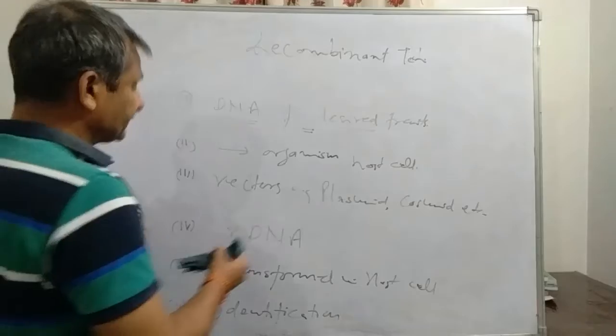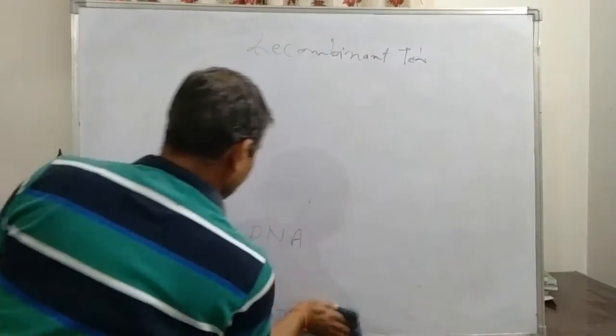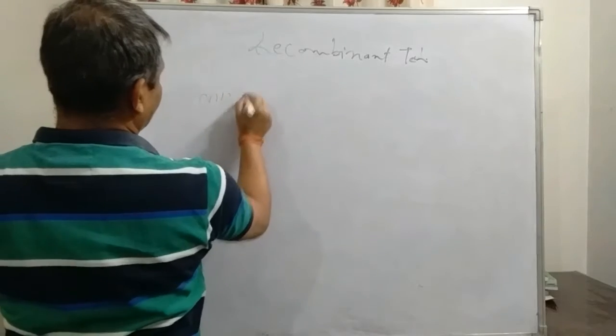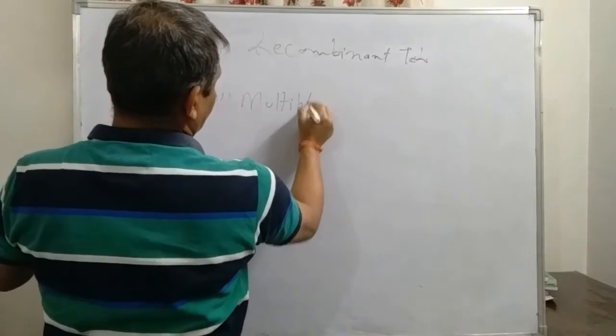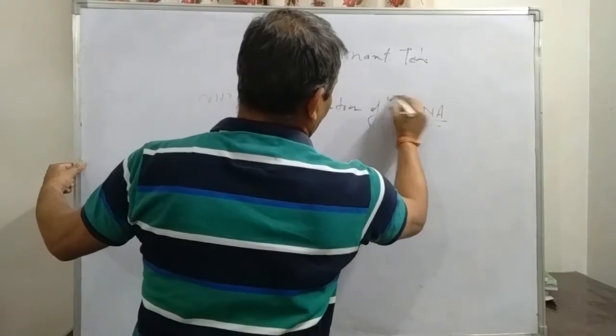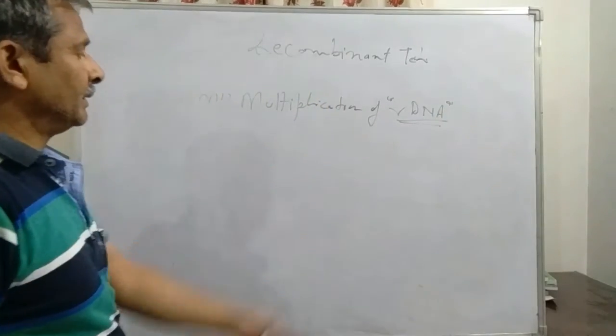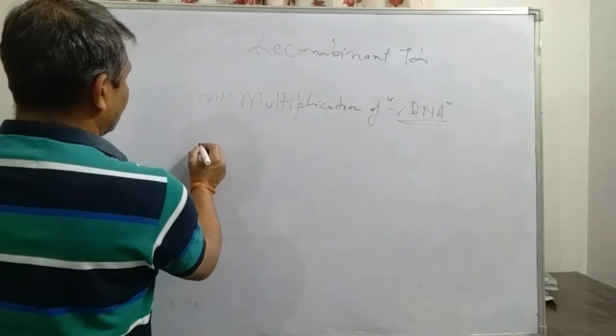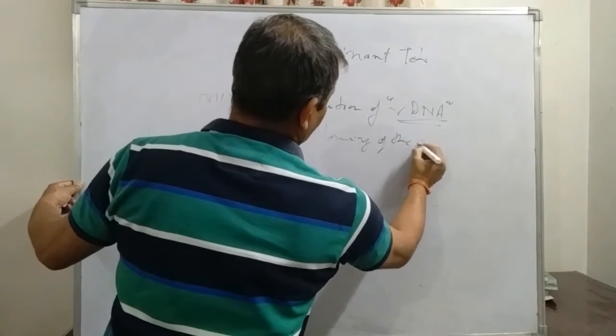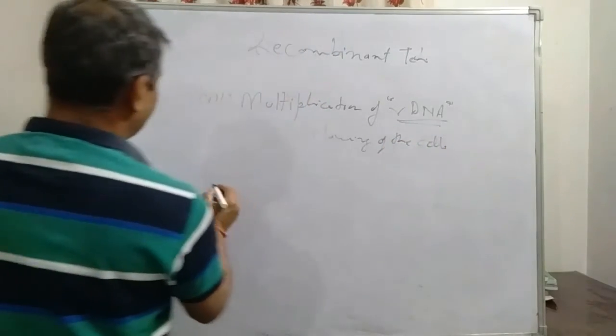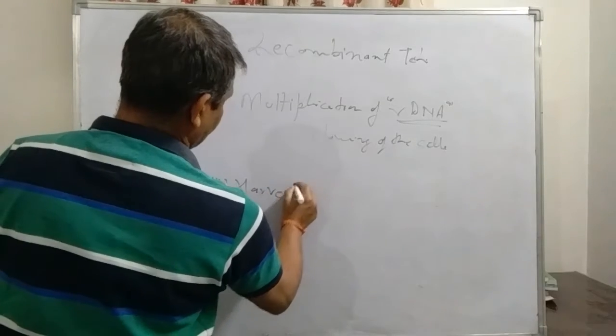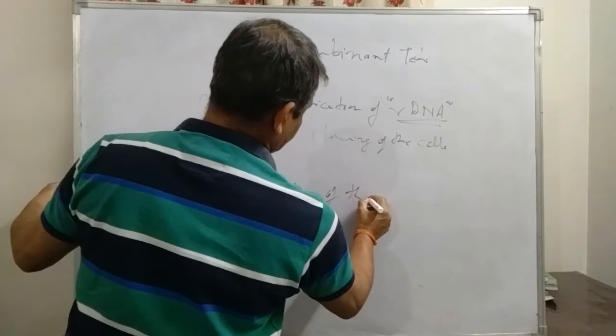Then we go further. Multiplication of the copies. Next step is the multiplication, multiplication of RDNA. What recombinant we have made, now we are going to multiply it. Next step, this is known as the cloning, cloning of the cell. And next step is the harvesting, the harvesting of the cell.